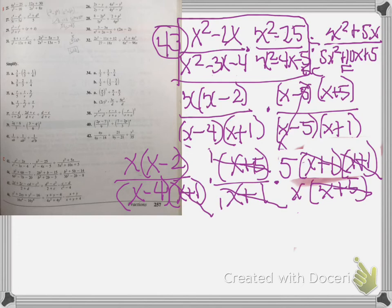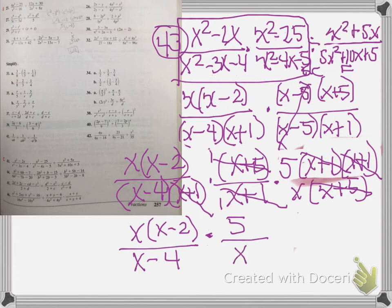So on top, that now leaves us x times x minus 2, over 5 over x minus 4. And I see that I can still reduce x and x. So now I'm going to distribute that 5. So 5 times x is 5x, 5 times negative 2 is negative 10, over x minus 4.